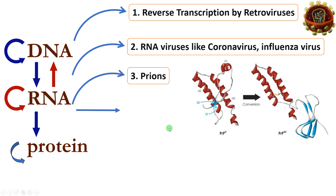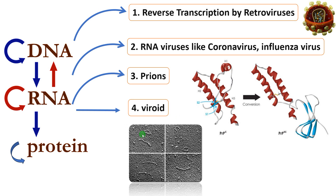The fourth exception is viroids. Viroids are infectious single-stranded circular RNA particles that infect plants. They are infectious RNAs capable of self-replication — this RNA can give rise to other viroids — and can cause diseases like potato spindle tuber viroid disease. Only RNA is involved, with no DNA.